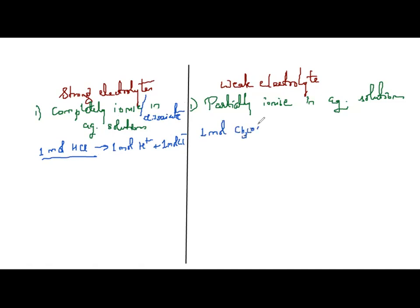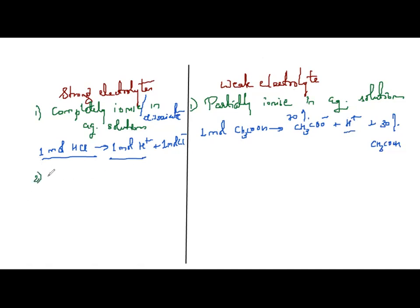In strong electrolytes, maximum number of H⁺ ions are present; in weak electrolytes, fewer H⁺ ions are present. The degree of dissociation (alpha, α) of strong electrolytes is 1 — they dissociate completely. For weak electrolytes, alpha is far less than 1. Examples of strong electrolytes include all strong acids, strong bases, and some salts — for example, HCl, H₂SO₄, HNO₃ (strong acids), NaOH, KOH (strong bases), and AgCl, AgNO₃, NaCl (salts).